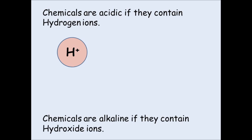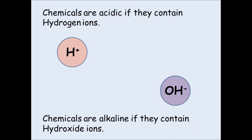Chemicals which are alkaline contain what's called a hydroxide ion. This is an atom of oxygen and an atom of hydrogen combined with an overall negative charge. That's why it's written OH-.